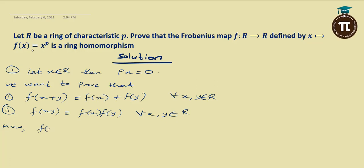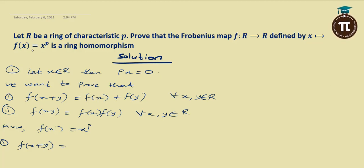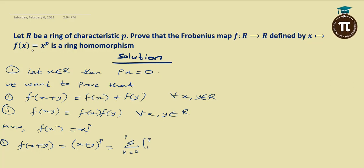F of X is equal to X raised to the power of P. I want to prove the first one. F of X plus Y will be equal to X plus Y raised to the power of P. This will be equal to the summation of K starting from 0 to P of P-choose-K — the binomial coefficient — times X raised to power K, times Y raised to power P minus K.